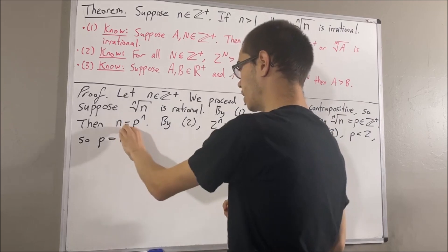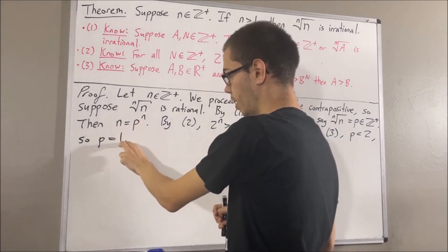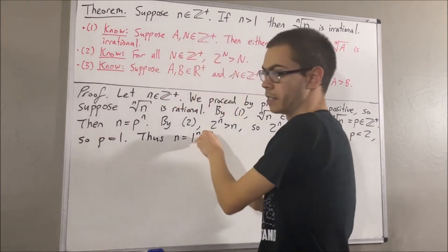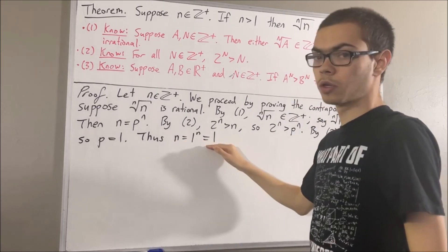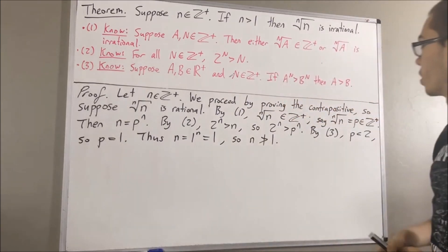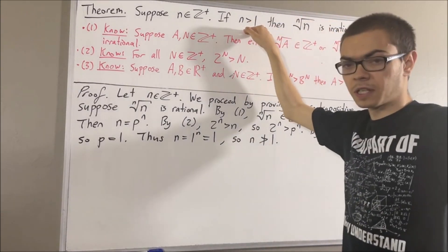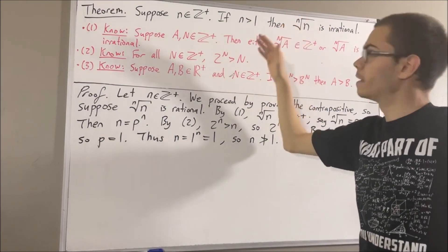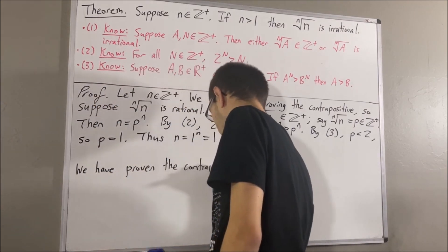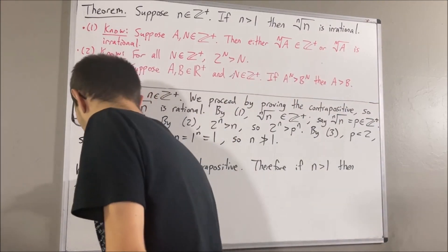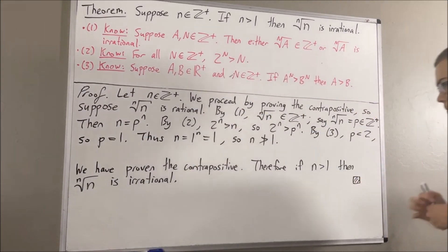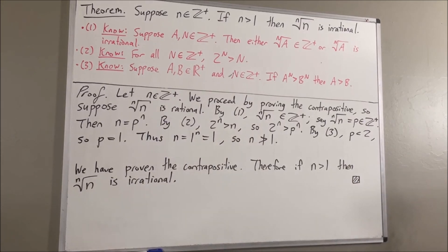And since p is a positive integer, we know that the only positive integer less than 2 is 1, so p is equal to 1. Then, since n is equal to p to the n, we substitute p for 1 and we get that n is equal to 1 to the power of n, which equals 1. So n is equal to 1, which tells us n is not greater than 1. Therefore, we have shown the contrapositive: if the n-th root of n is rational, then n is not greater than 1. By the contrapositive, if n is greater than 1, then the n-th root of n is irrational. This completes the proof.